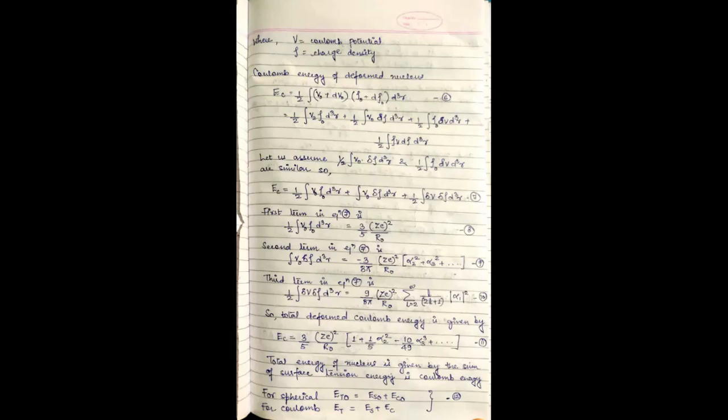So the total deformed Coulomb energy is hence given by EC equals 3 by 5 times Z e square upon R naught times 1 plus 1 by 5 alpha 2 square minus 10 by 49 alpha 3 cube plus so on. This is equation 11.